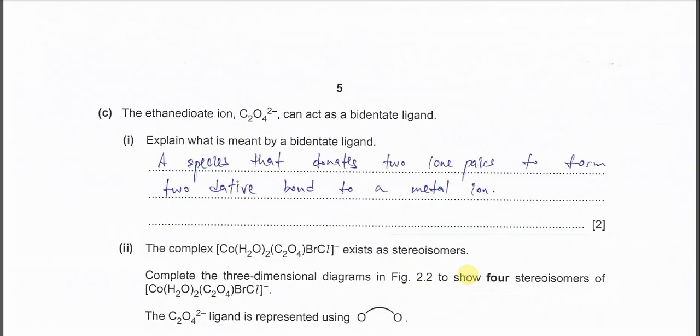Okay, part C. Now we have this bidentate ligand called ethanedioate ion C2O42-. So part one, explain what it means by bidentate ligand. Okay very easy.